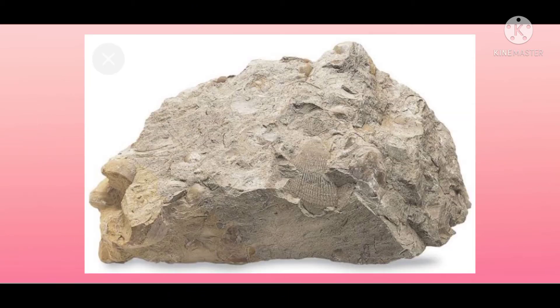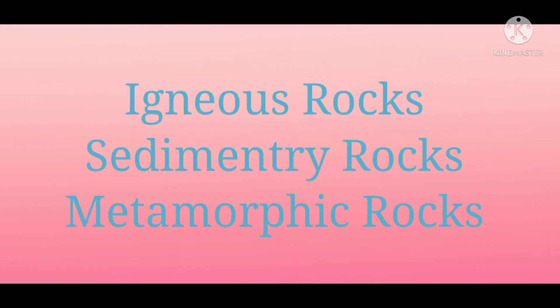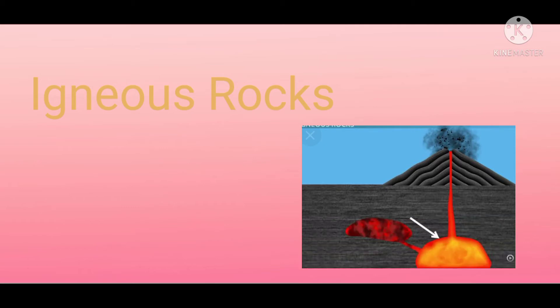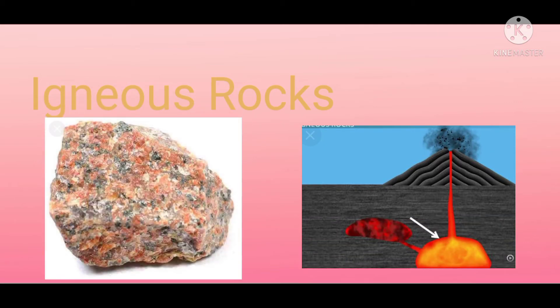Now let me ask you a question. Can you tell me what is this? You will say it is a rock. Can you tell me which type of rock this is? Yes, rocks have three types: igneous rocks, sedimentary rocks, and metamorphic rocks. When molten magma cools down and becomes solid rock, these are called igneous rocks. They are also called primary rocks. 'Igneous' comes from the Latin word meaning fire. There are two types of igneous rocks: intrusive igneous rocks and extrusive igneous rocks.